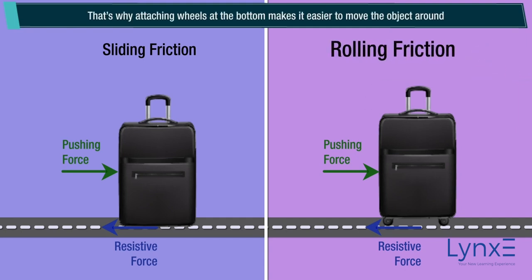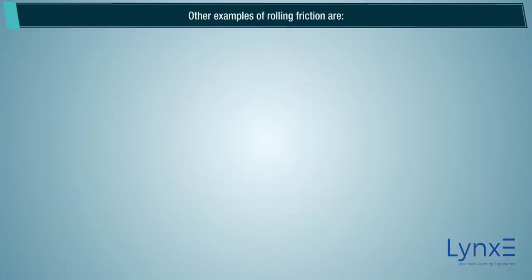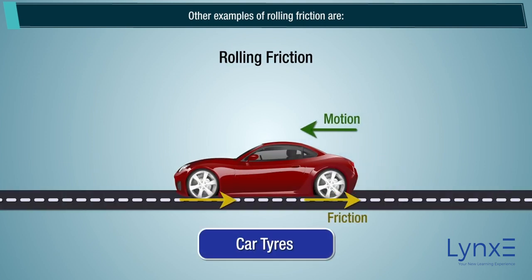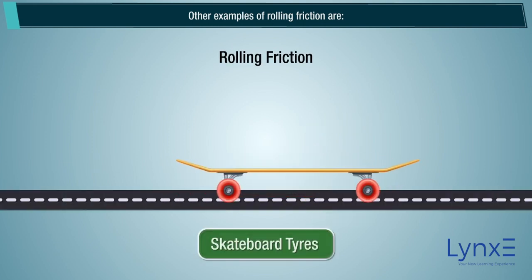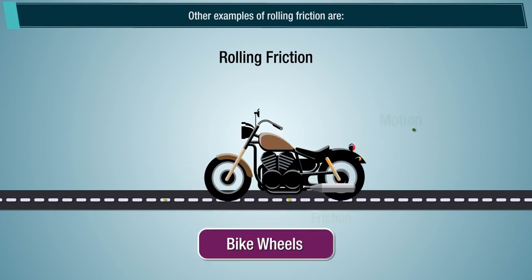That's why attaching wheels at the bottom makes it easier to move the object around. Other examples of rolling friction are car tires, skateboard tires, and bike wheels.